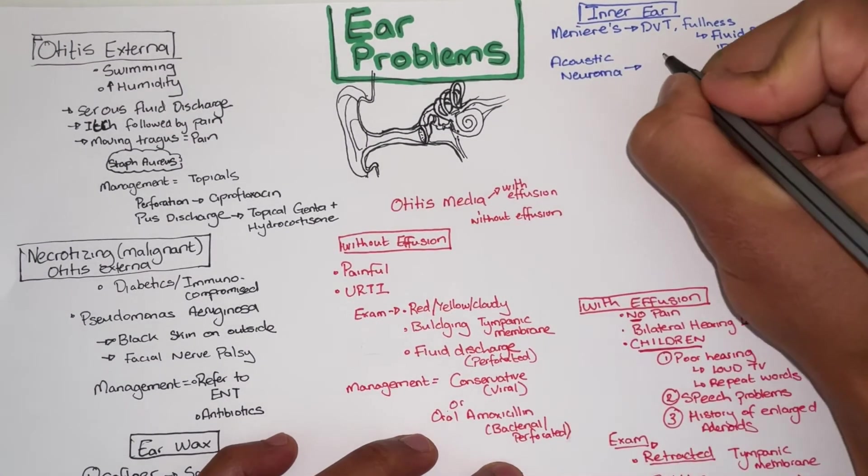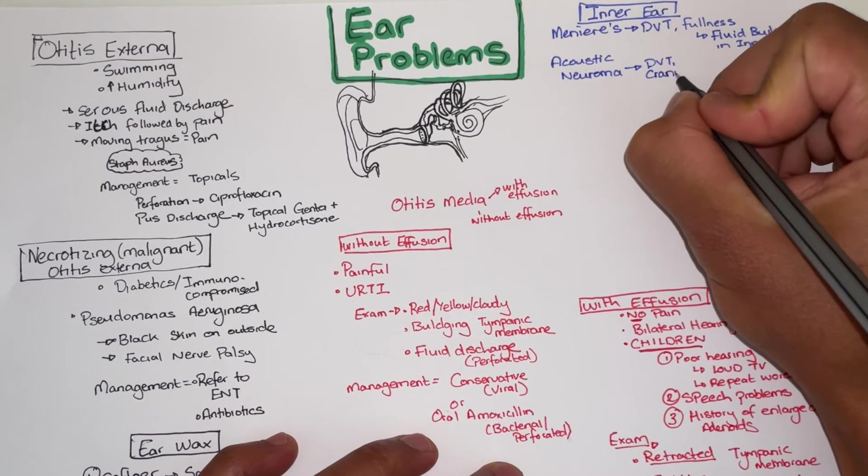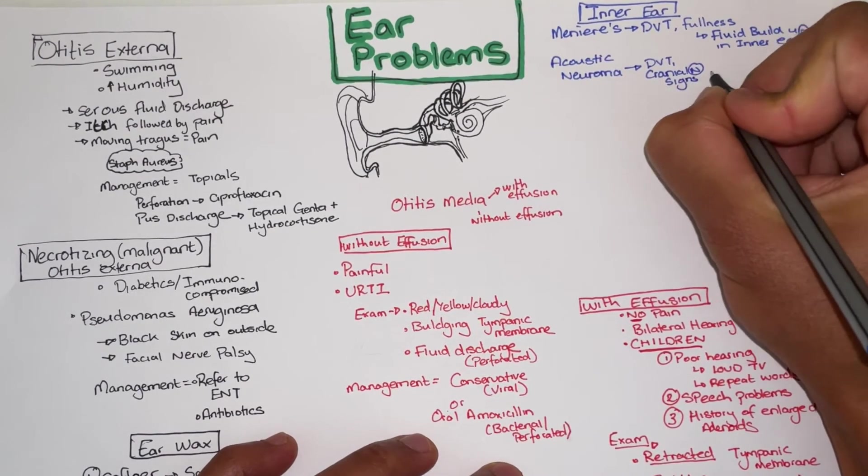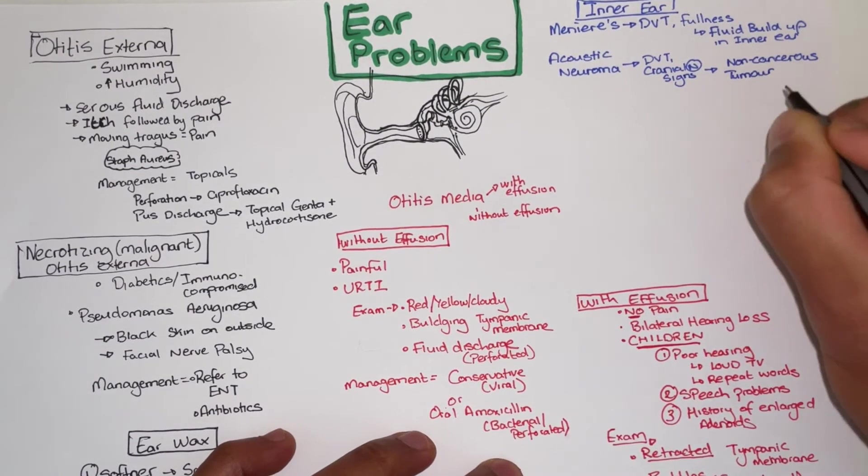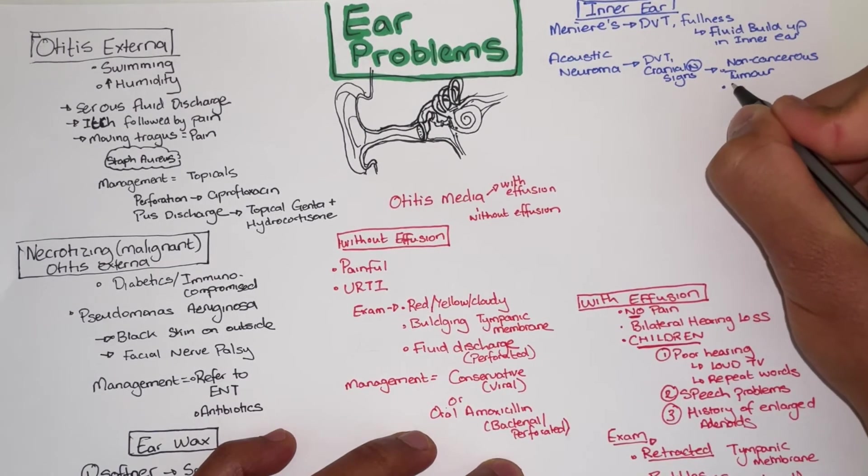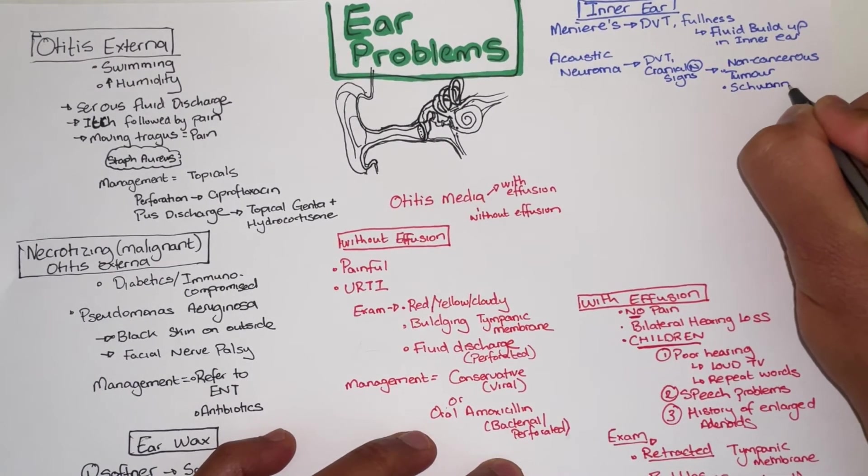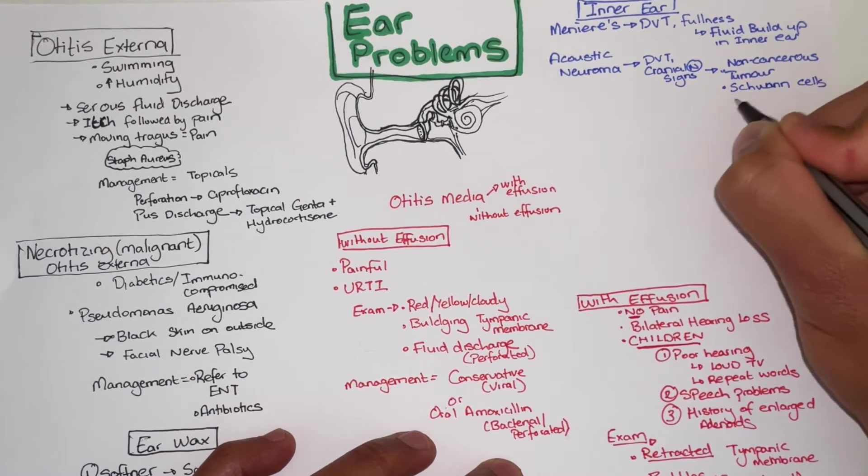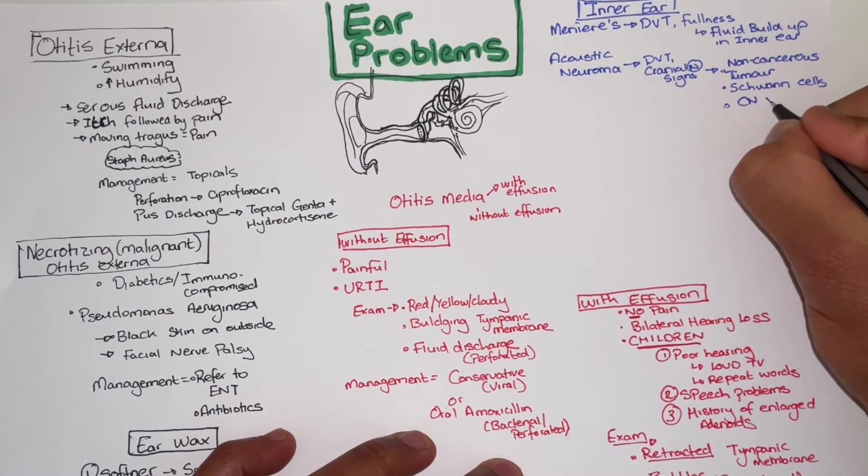Acoustic neuroma is a non-cancerous tumor originating from the Schwann cells. It occurs at the vestibulocochlear nerve and as it grows it compresses on the surrounding cranial nerves. This includes the facial and the trigeminal nerve thus resulting in the cranial nerve signs that you will see along with deafness vertigo and tinnitus.